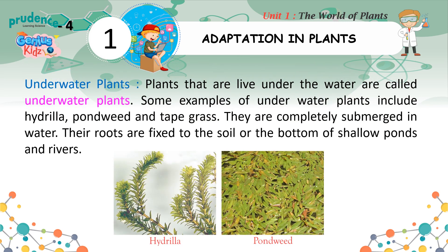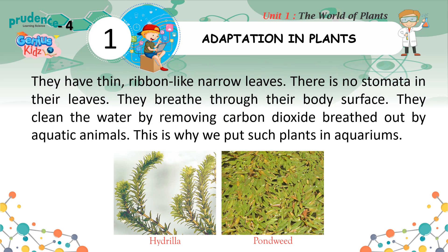Underwater plants live completely under the water. Some examples include hydrilla, pondweed, and tapegrass. They are completely submerged in water, and their roots are fixed to the soil or the bottom of shallow ponds and rivers. They have thin, ribbon-like narrow leaves with no stomata, and breathe through their body surface. They clean the water by removing carbon dioxide breathed out by aquatic animals, which is why we put such plants in aquariums.